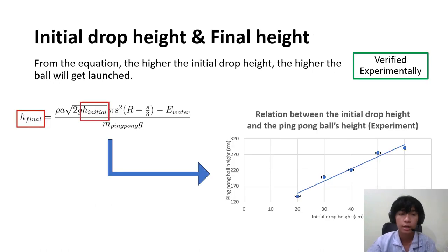And this is the relation between the initial drop height and the final height. As you can see from the equation, the higher the initial drop height, the higher the ping pong ball will get launched.